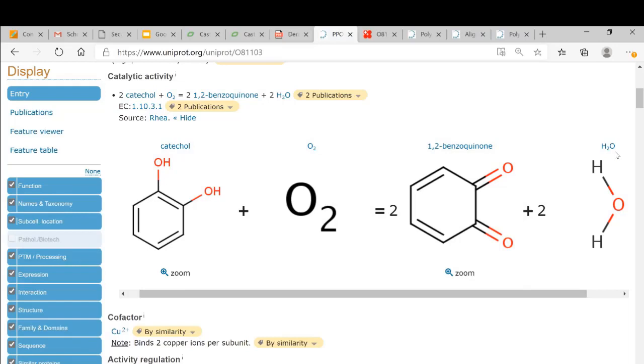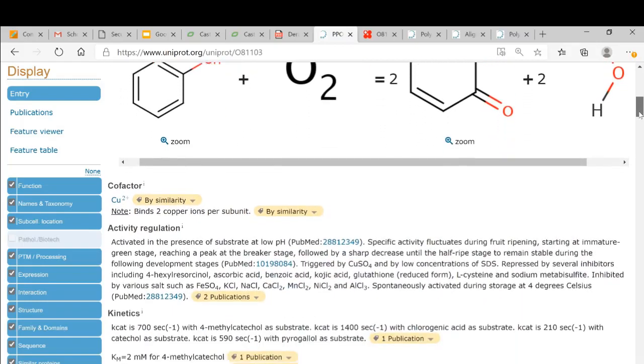Polyphenol oxidases can work with other substrates, not just catechol. For example, dopamine is the substrate that we are going to use in the class. In order to carry out that oxidation, a cofactor is needed.